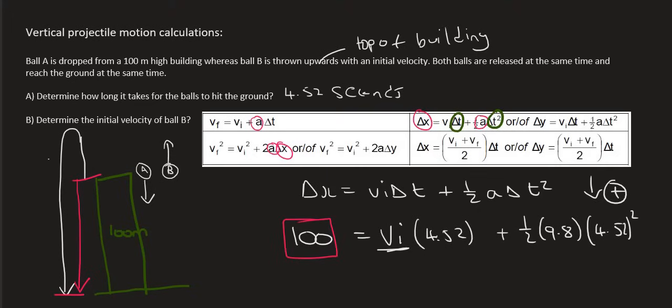And then the time is 4.52 squared. Now we just need to solve for Vi. So I'm going to take the 100 and I'm going to minus this part over here. So that's 4.9 because half of 9.8 times by 4.52 squared equals 4.52·Vi.